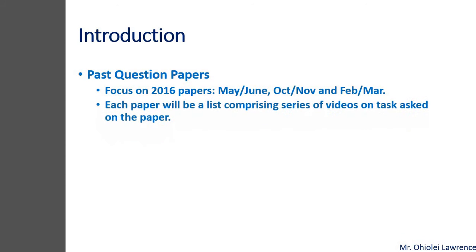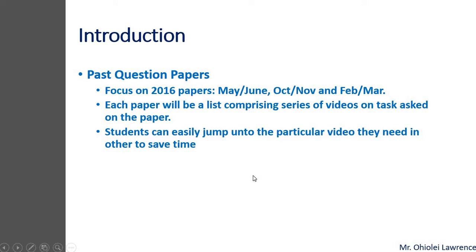We will make sure that each paper is treated in the form of lists, made of different tasks that students can easily access. For example, majoring paper 2, comprising word processor, database, spreadsheet, mail merge and all that — we look at these as a list. And each aspect of the task will be treated in smaller videos so that students can easily have access to those videos without going through all the lessons.